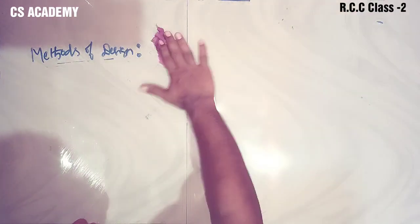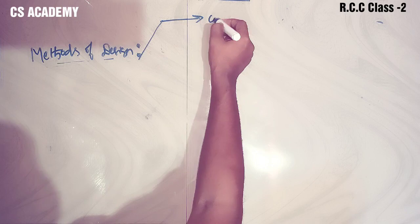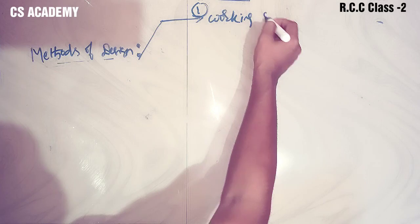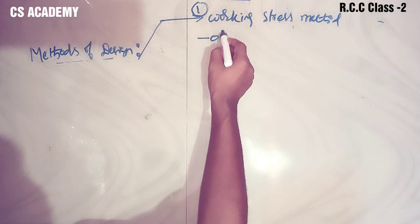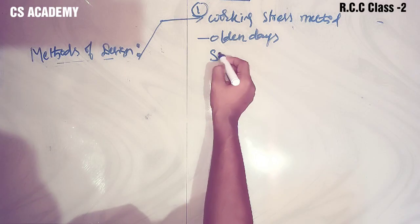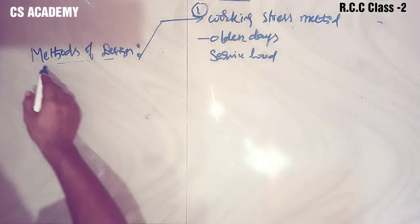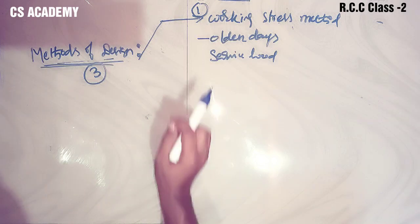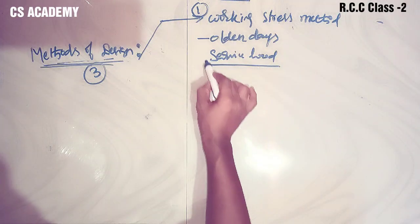There are three types of design methods. The first design method is the Working Stress Method - make sure to note this as it is important for exams. Working Stress Method - this is the first method, used in the old days. In this method we study the service load.